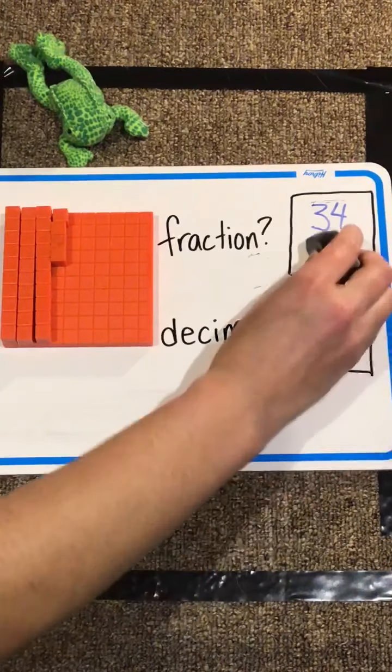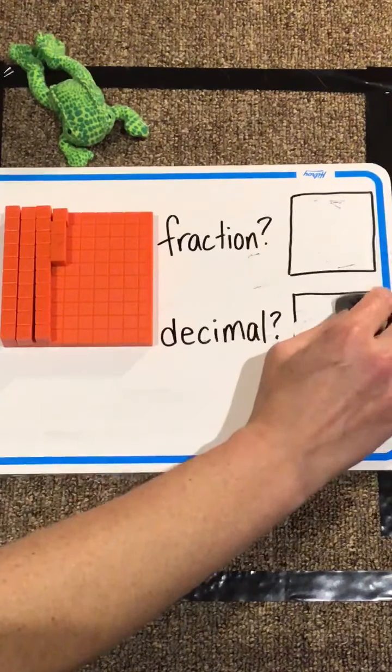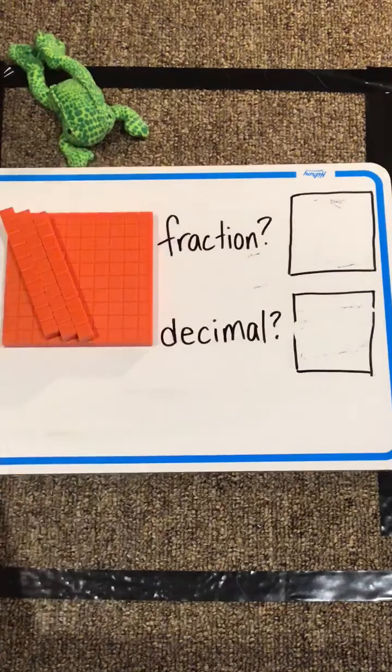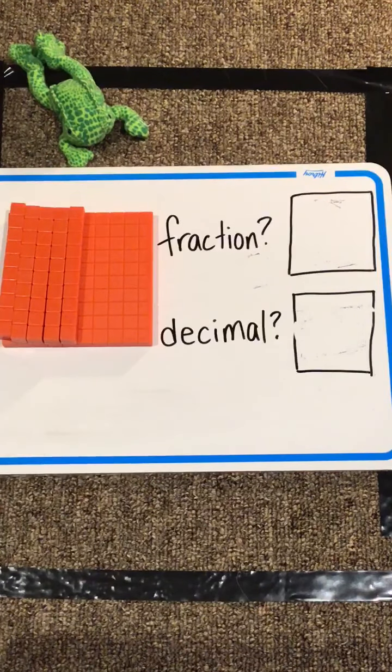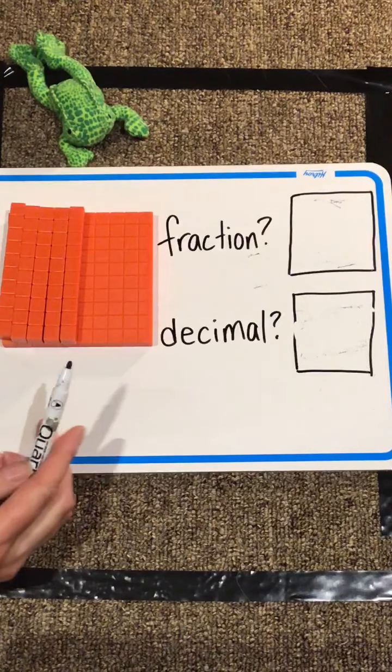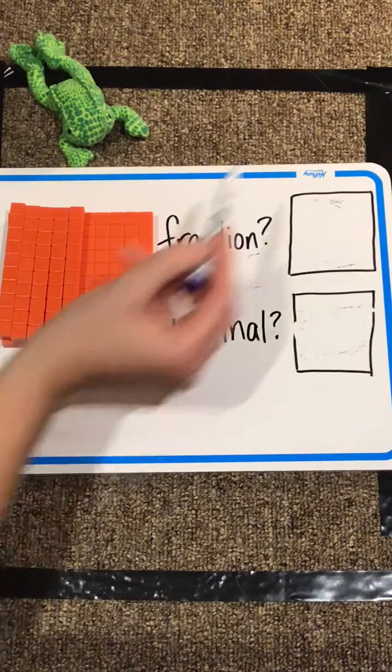Let's try a different one. So this time I've got five of those. So ten, twenty, thirty, forty, fifty.